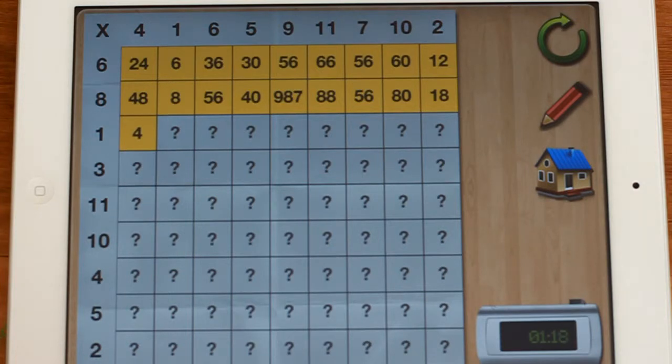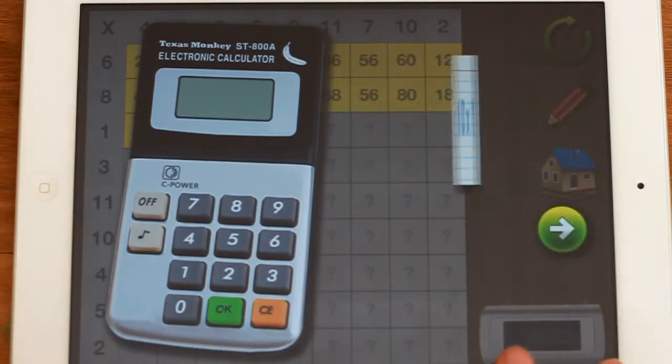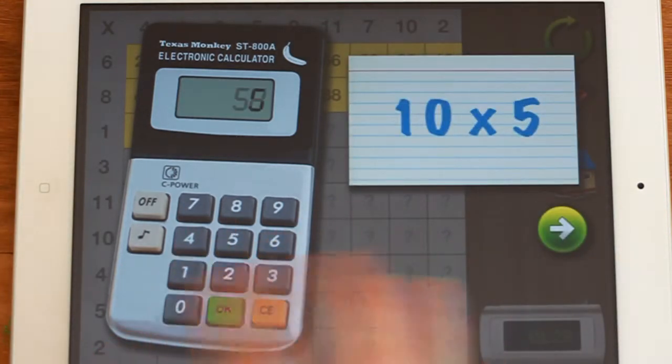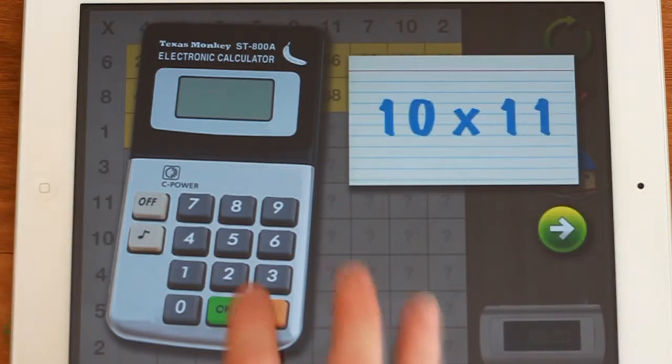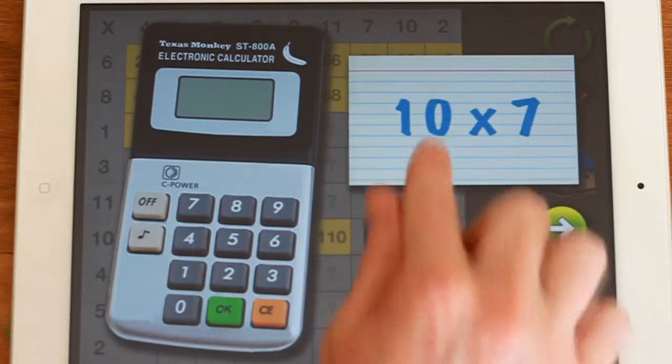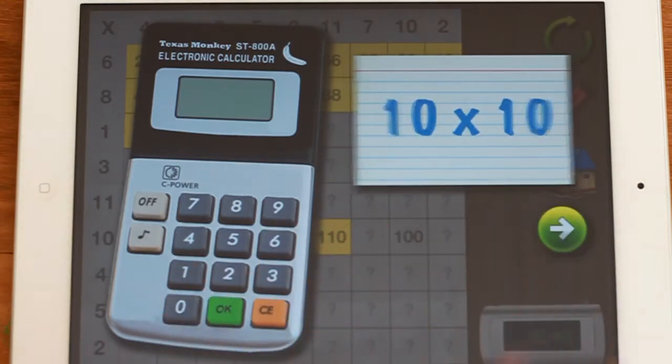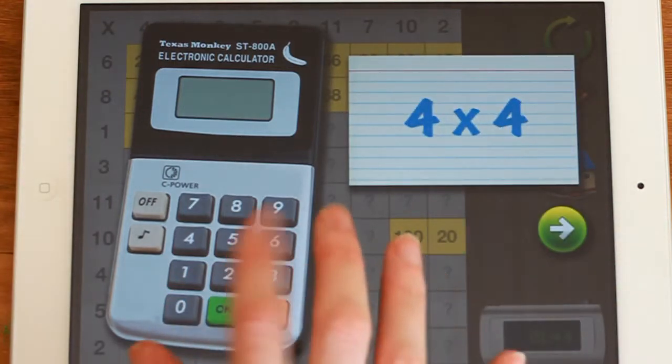One of the strategies that some children use is that they do the easy ones first. And that is a good way of getting the easy ones out of the way or working. Now I'm just going to skip this one and we'll see what happens when we get back to the main grid.